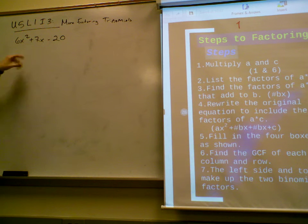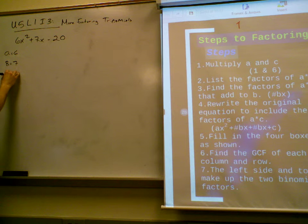Now, before I go to the factors, do you guys see any number that's common in every term? Just 1, right? So we're going to factor by using the method we've used before. A is 6, B is 7, and C is negative 20. Step 1, multiply A and C.